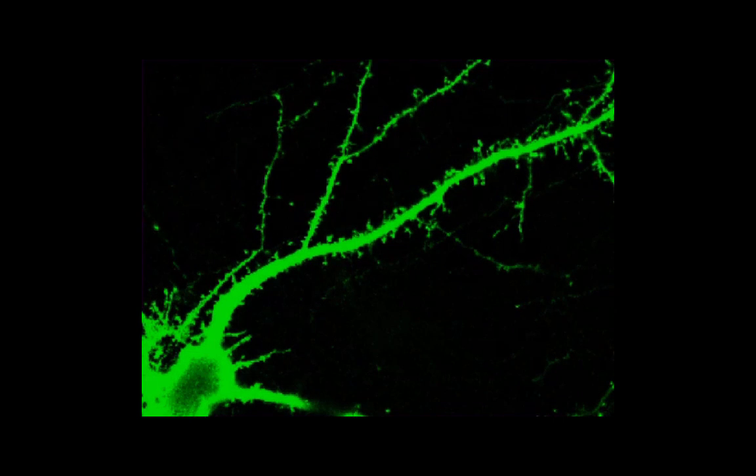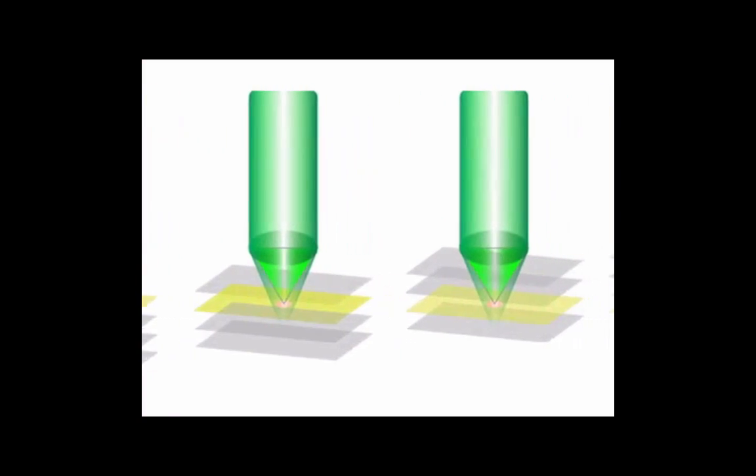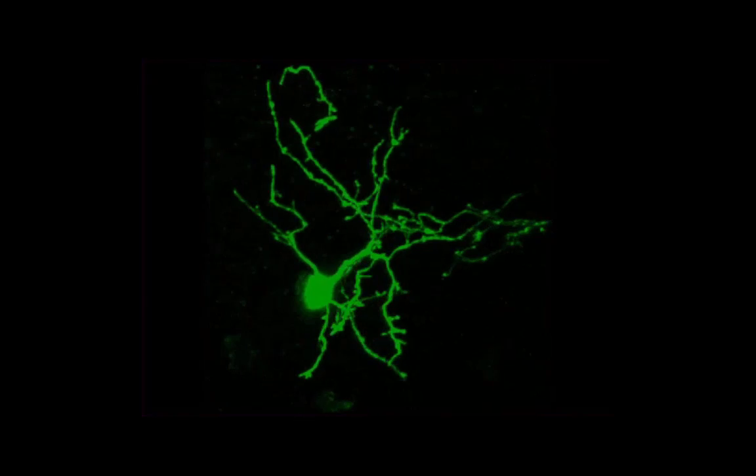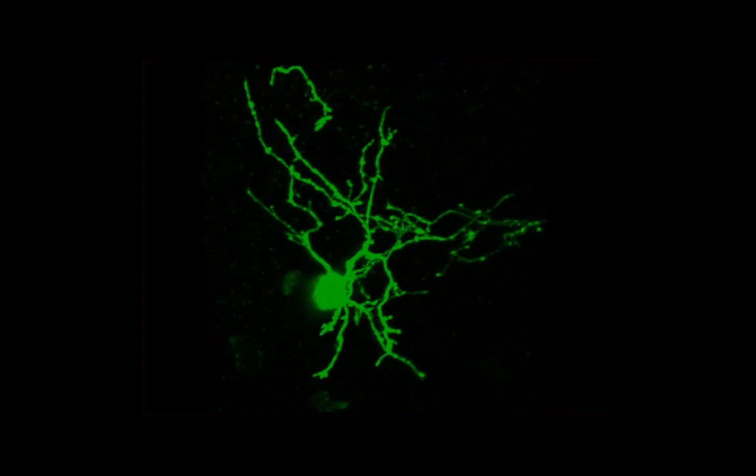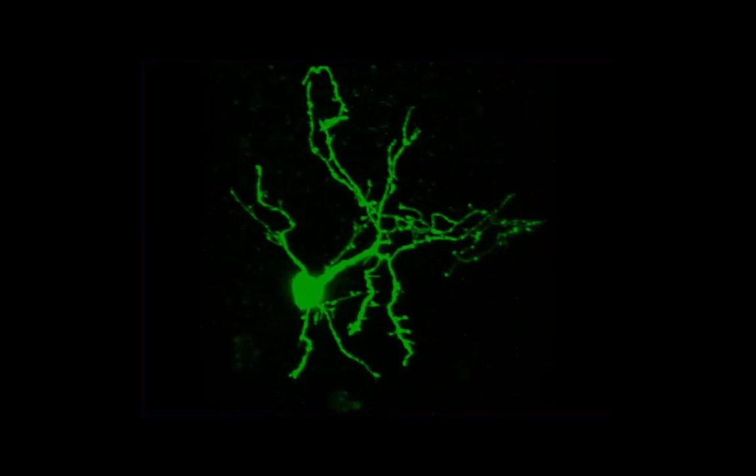Confocal imaging is an improved method of fluorescence microscopy that permits the optical sectioning of neuronal tissue, and can therefore be used to generate 3D reconstructions of neurons so their morphology, or shape, can be studied.